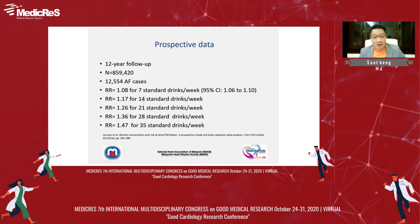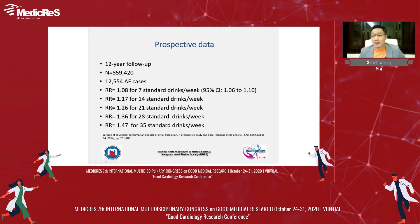For moderate consumption — from 7 to 21 drinks — there is a 17 to 26% increase in risk. Obviously, if you drink more, the risk of AF development will be more. At 28 drinks per week, there is a 36% increase. At 35 drinks, it's 47% — nearly a 50% increase. That's a lot.